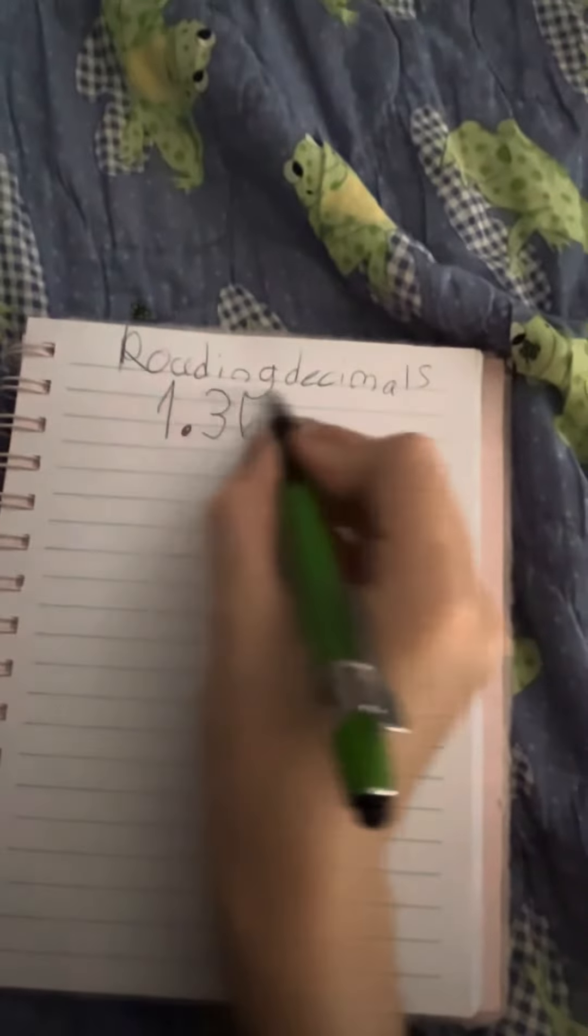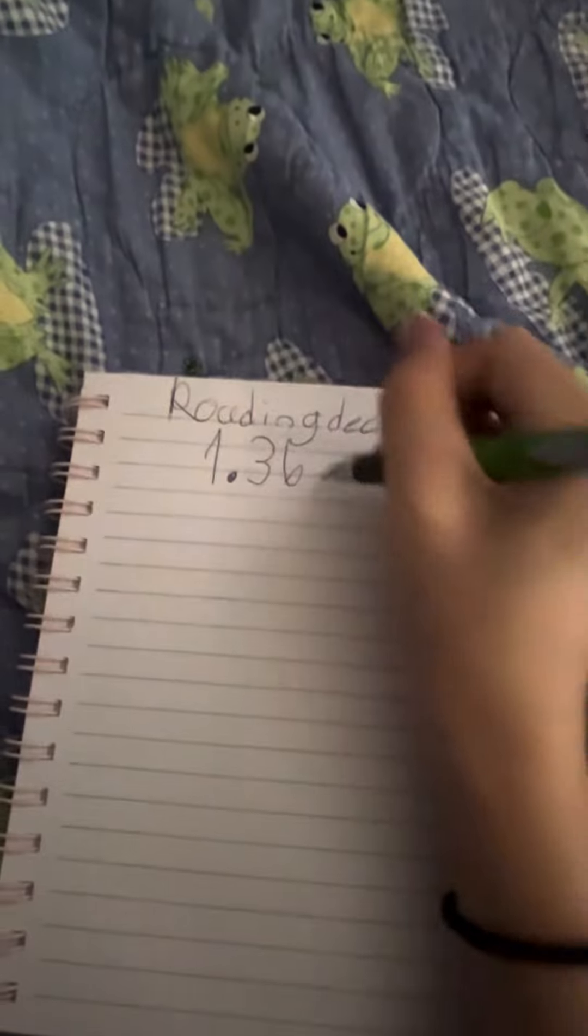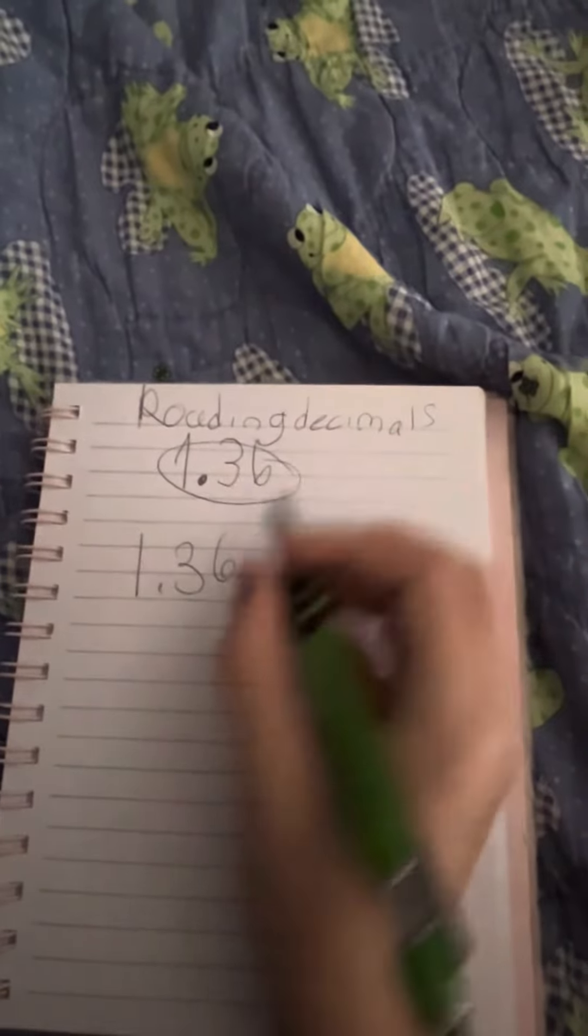Today we are going to be rounding decimals. I chose 1 and 36 hundredths as seen in the video. We're going to write it down here, 1 and 36 hundredths.